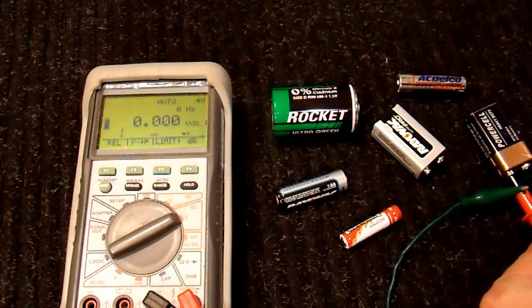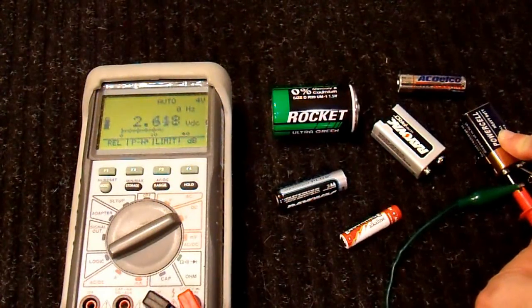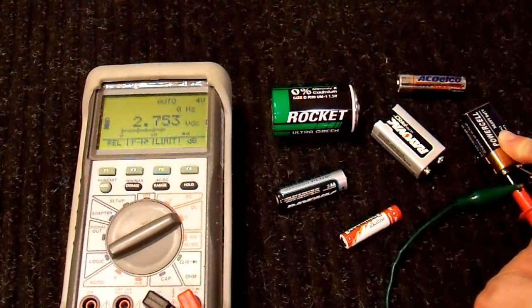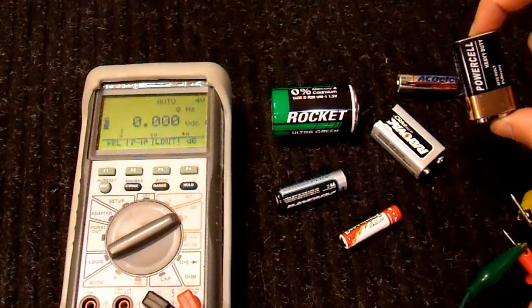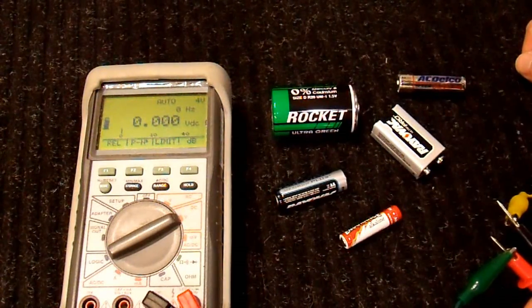We'll try this 9 volt battery, the one that tested over 9 volts before open circuit. And now you can see under load, it's only 2.7 volts. Very clearly bad. So this battery, even though it tested good open circuit on a multimeter, is no good. And I can just chuck that away because it is bad.